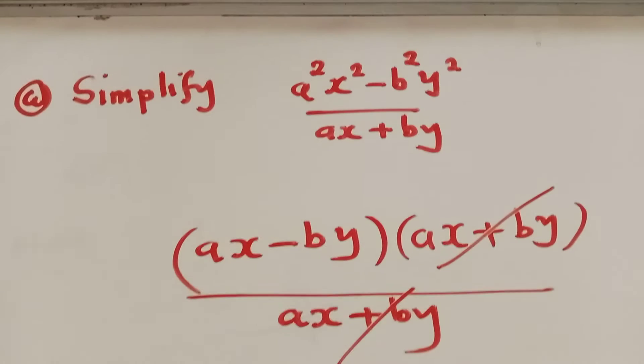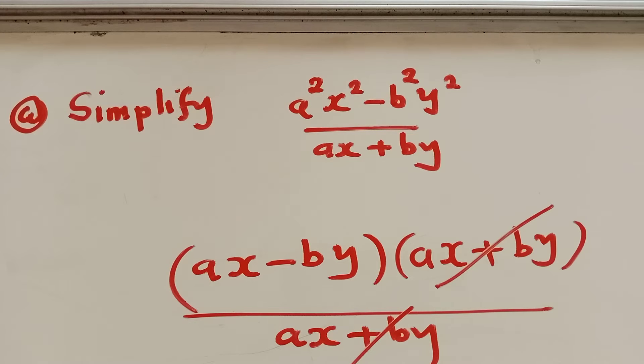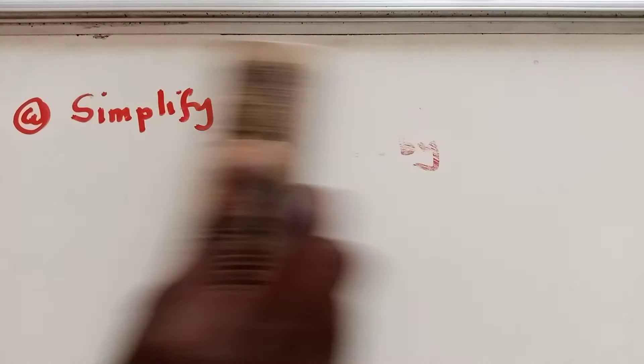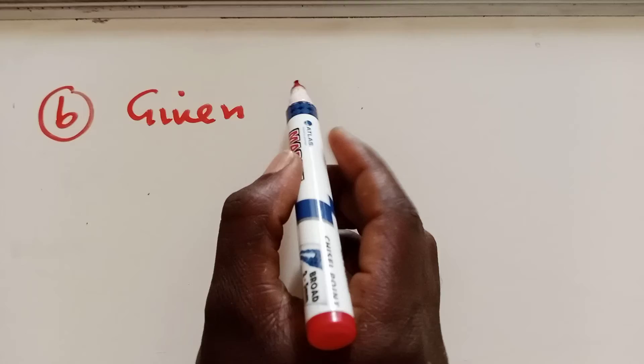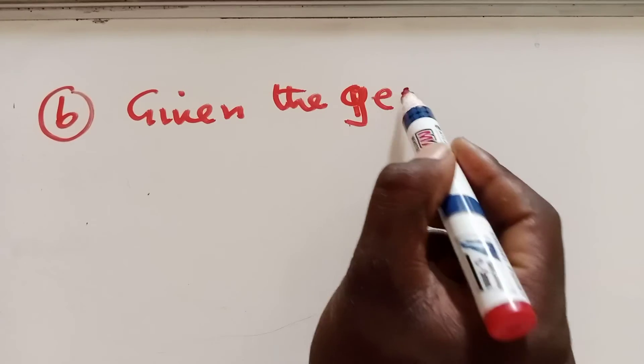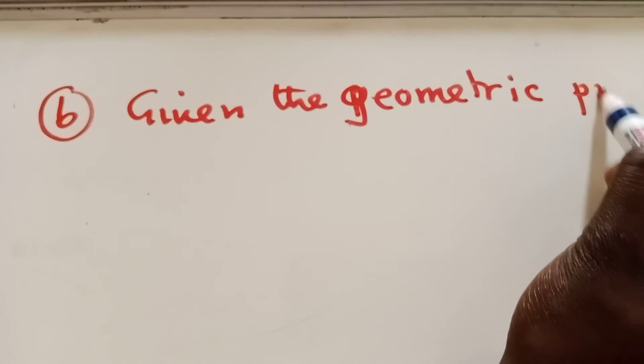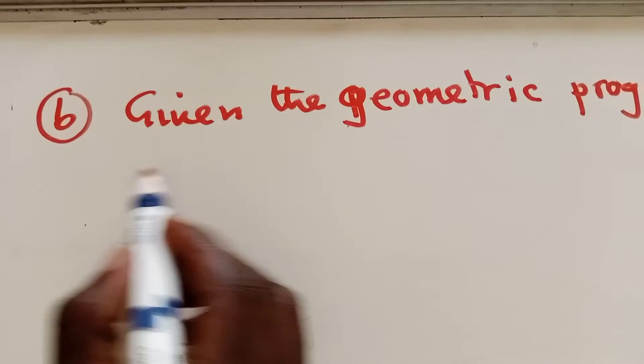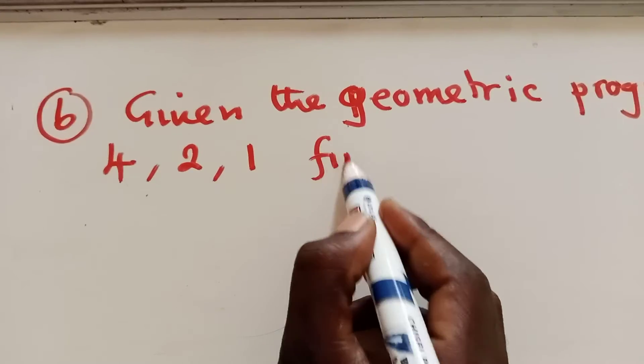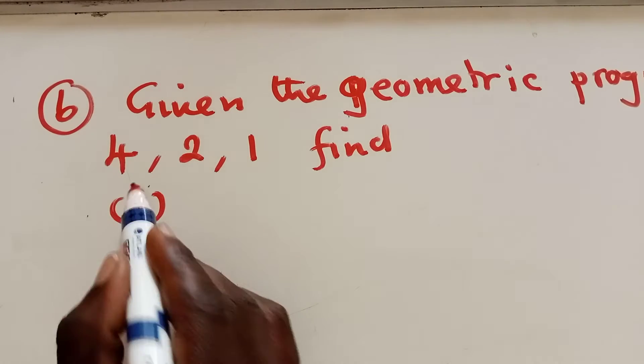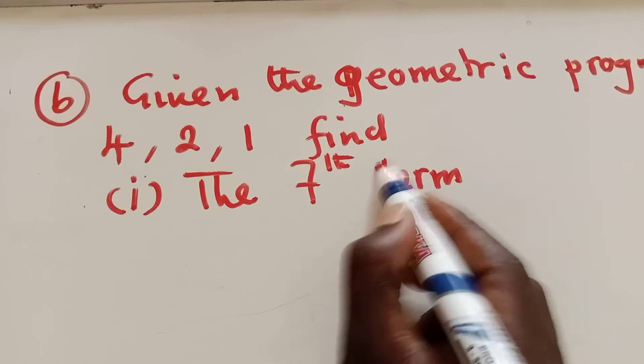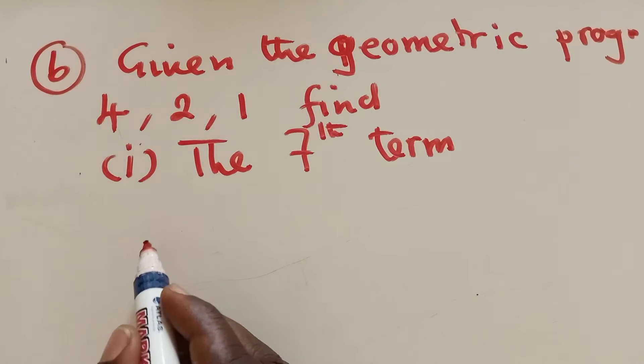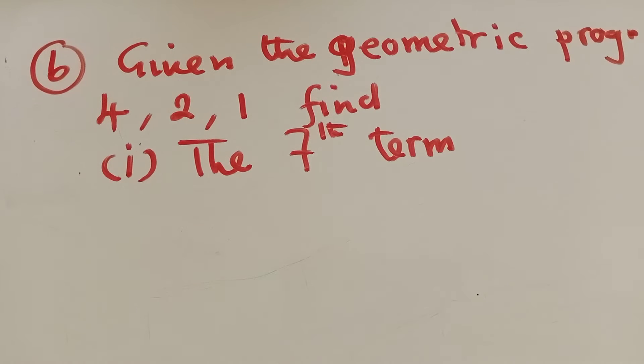Question b was to, we're given the geometric progression. Let me try to write it down so that you have an idea of what I'm talking about. So it was given the geometric progression 4, 2, 1. Find, Roman numeral 1, they said find the 7th term. So how do you find the 7th term?